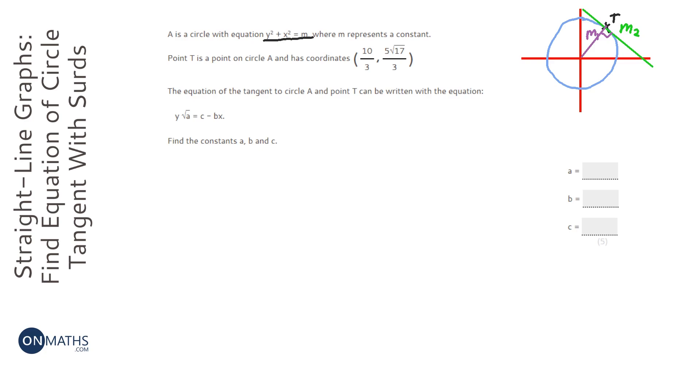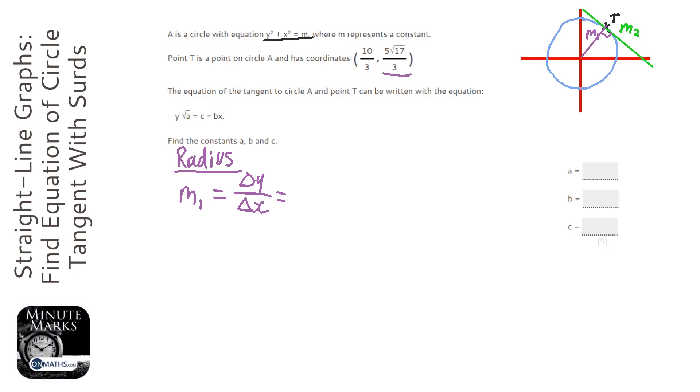So, I'm going to work out m1 first, which is the gradient of our radius. I'll probably show the examiner that I'm working out the gradient of the radius. To find out the gradient, we do change in y over change in x. Now, over just means divide. Because we know that 0, 0 is on the radius, all we can do is do the y coordinates given to us here, take away 0, and then put that over the x coordinate, take away 0. So, it's just going to be 5 root 17 over 3, over means divide. So, I'm going to show it as a divide sign. And then 10 over 3.